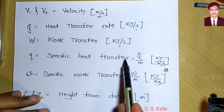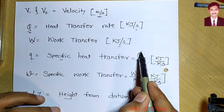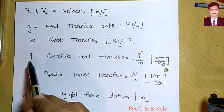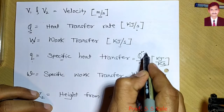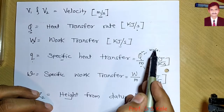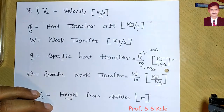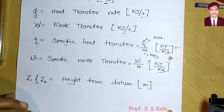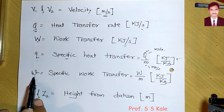Small q is specific heat transfer — heat transfer per unit mass. Total heat transfer rate (kJ/s) divided by mass flow rate (kg/s) gives small q in kJ/kg, since the seconds cancel out.